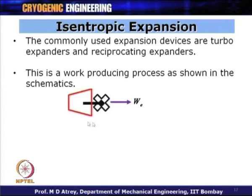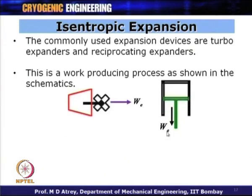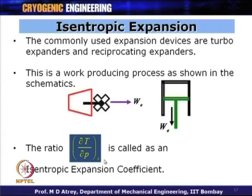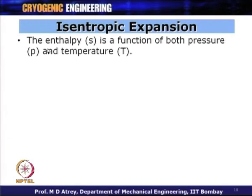In a turbo expander, you get shaft work W_E when the gas expands from high pressure to low pressure. Similarly for reciprocating expanders, work output W_E is obtained during expansion. The isentropic expansion coefficient mu_S is defined as delta T by delta P at constant entropy, and now let us derive its value.